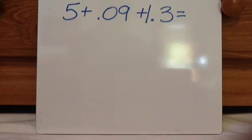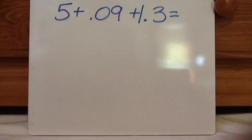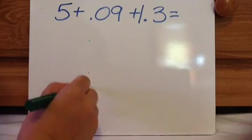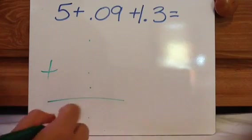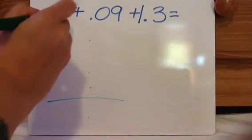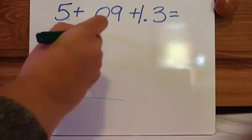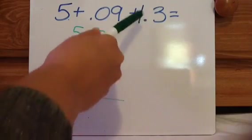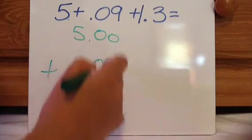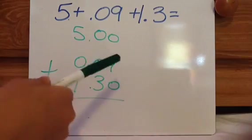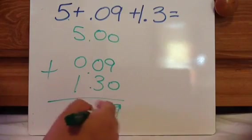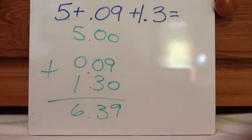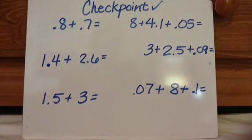Okay, let's look at this one. 5 plus 0.09 plus 1.3. So go ahead and just put your decimals. And now look at this. Notice this is 5, so it's like $5. 0.09. 1.3. Fill in your spots. So 9, 3, 6.